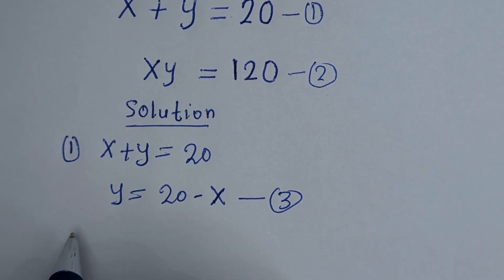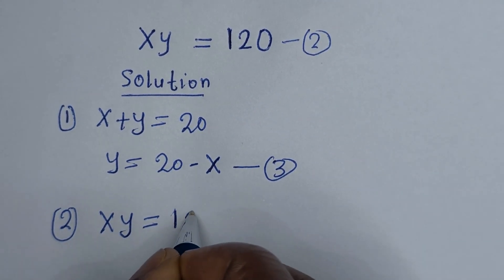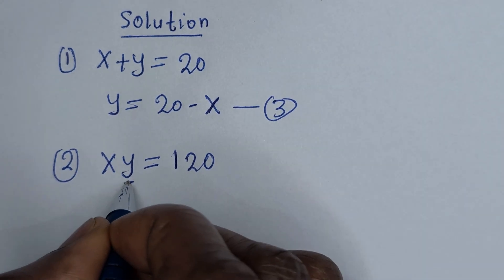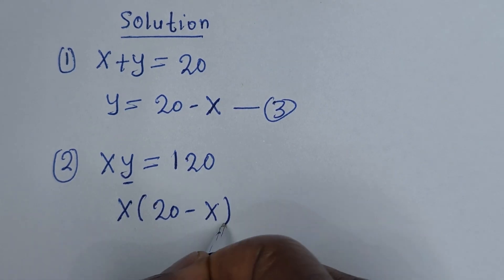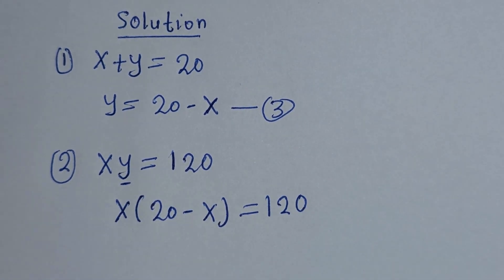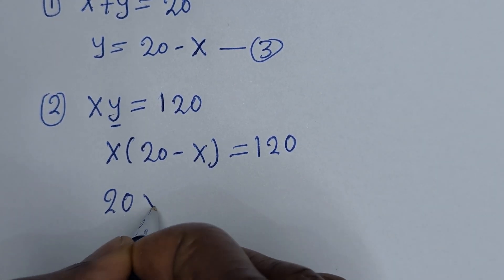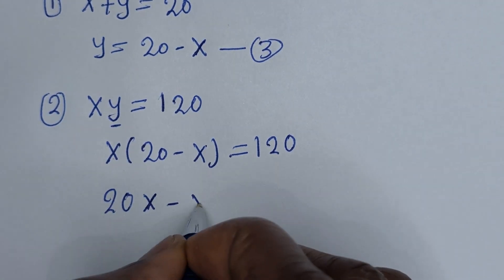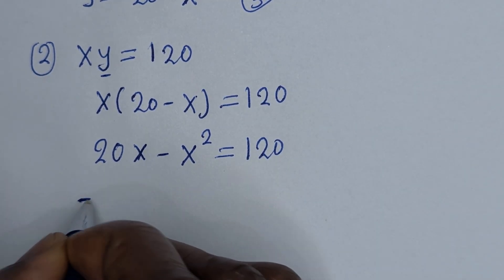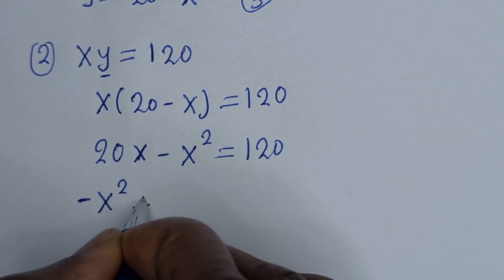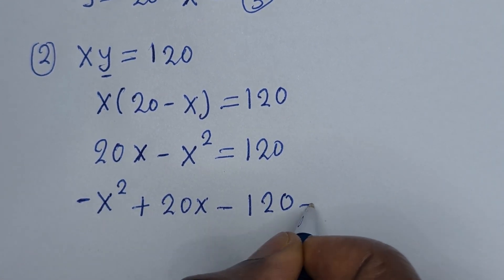Then from equation 2, xy is equal to 120. Let us substitute for y: x times (20 minus x) is equal to 120. Let us open the bracket: x multiplied by 20 is 20x, minus x multiplied by x is x squared. So: minus x squared plus 20x minus 120 is equal to 0.